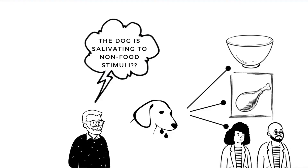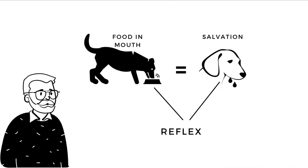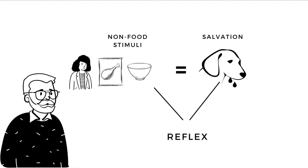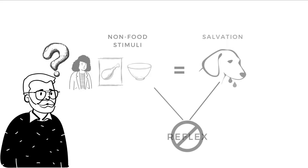This is a rather unusual phenomenon because salivating to food in the mouth is a reflexive process with no deliberate learning involved, and thus salivation in response to food was expected. However, dogs don't reflexively salivate at the sound of footsteps, the picture of food, or even an empty bowl. This intrigued Pavlov, leaving him wondering what might be causing the dogs to salivate at the sight or sound of non-food stimuli.